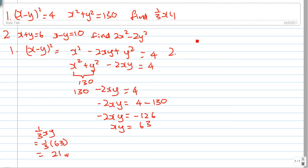If x + y equals 6 and x - y equals 10, find 2x² - 2y². First, can you extract the common term?